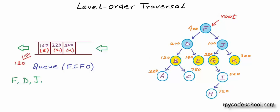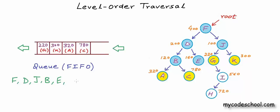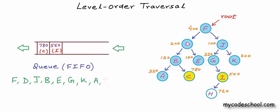At this stage we can dequeue the node at address 120, visit it, and enqueue its children. After B we will have E, and nothing will go into the queue this time. Next we will have G, and the address of I will go into the queue. Now K will be visited. At this stage we have references to three nodes in the queue. We will visit the node at address 320 with value A, then C, then I, and the node with value H will go into the queue. Finally we will visit H, and now we are done with all the nodes. The queue is empty, so we are done with our traversal.